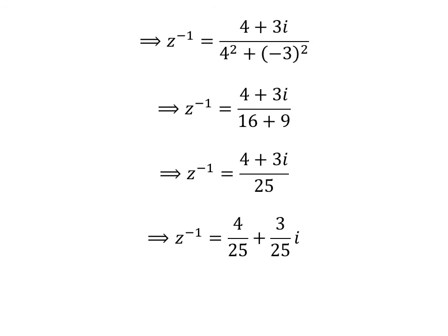We can write our fraction as sum of two fractions. So, multiplicative inverse of z is equal to 4 upon 25 plus 3 upon 25 times i.